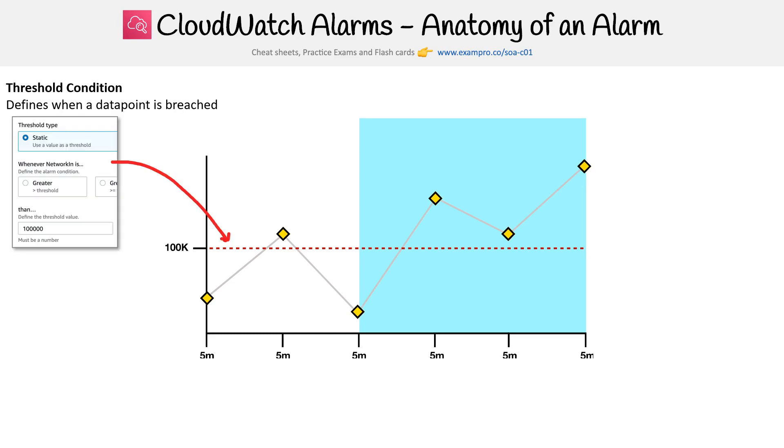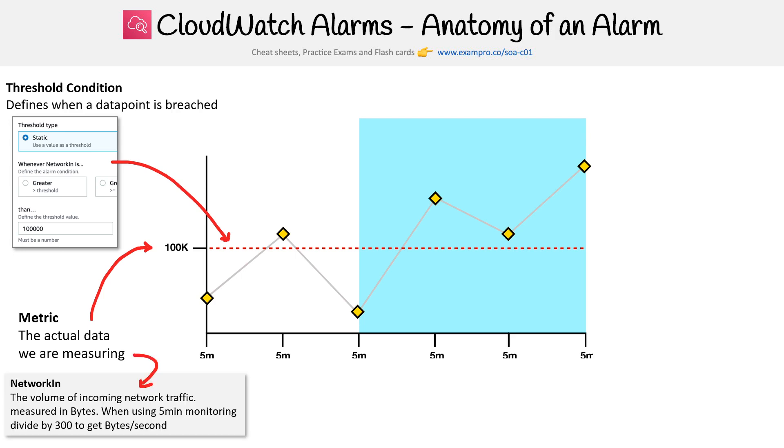So the threshold condition defines when a data point is breached. Okay, so what you're doing is you define this line, and whatever's above it is breached or below it. Those rules can change based on some conditions. You have your metric - this is the actual data we are measuring. And a metric could be something such as network in.